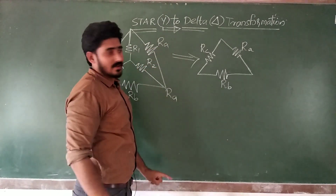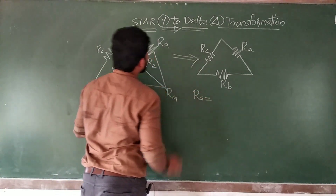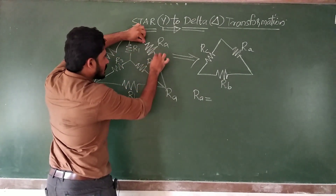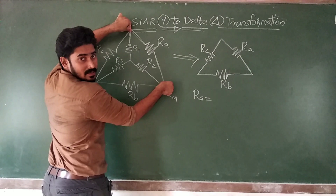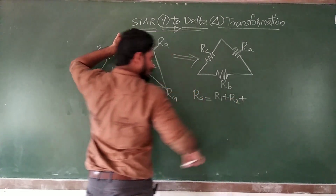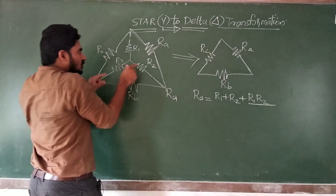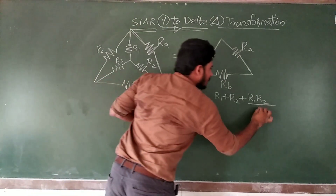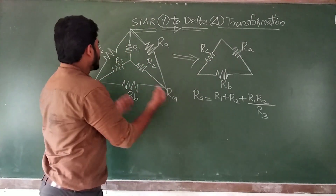How can you convert R1 into Ra? If you want to find out the value of Ra, you write Ra equals — you take the two resistors which are connected to Ra. R1 and R2 are connected to Ra, so you just add them: R1 plus R2, plus you have to multiply them — R1 into R2 — divided by the third resistor R3. Now you have the value of Ra.